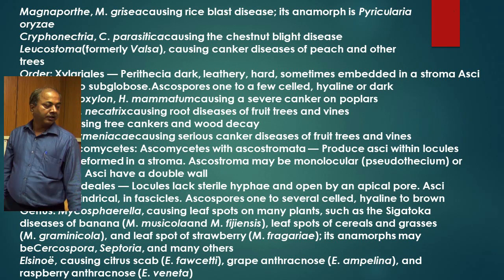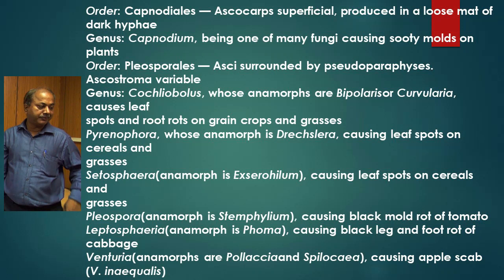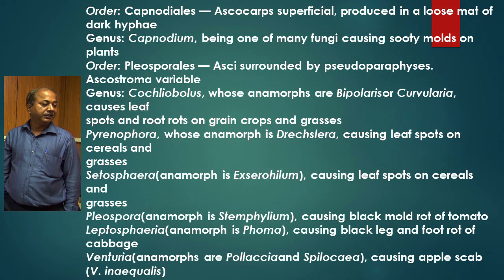The next order is Capnodiales. The Capnodiales order is characterized by ascocarps that are superficial, produced in a loose mat of dark hyphae. The genus Capnodium is one of many fungi causing sooty mold on plants.